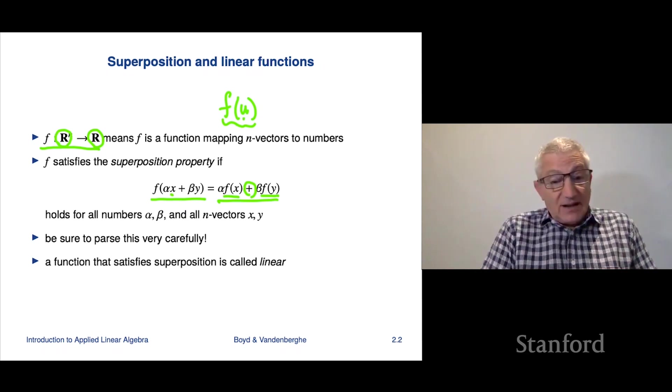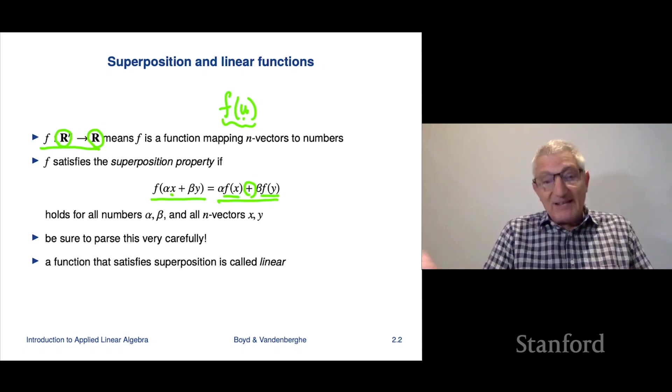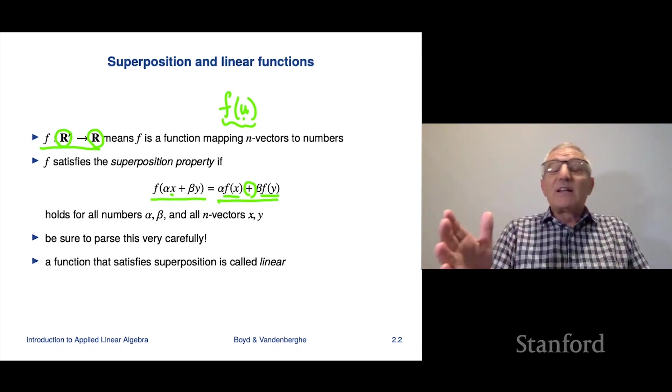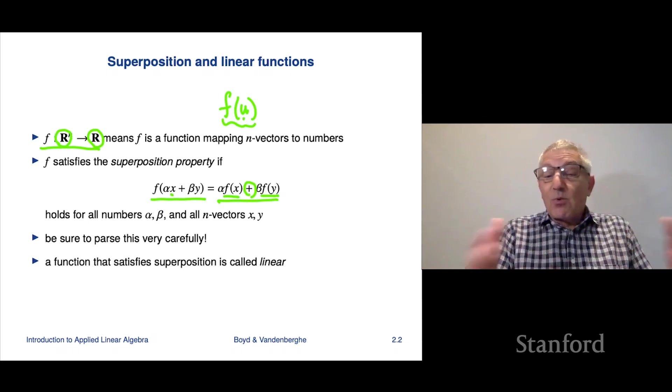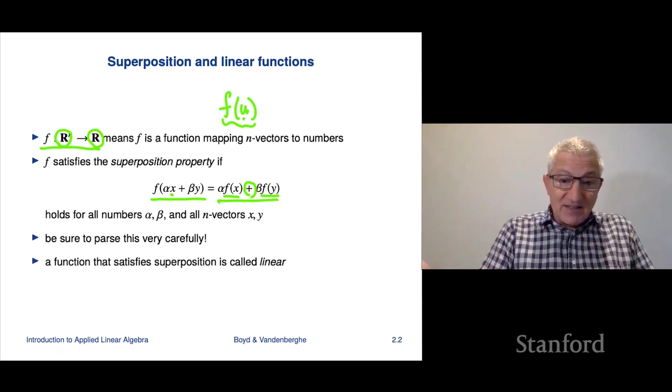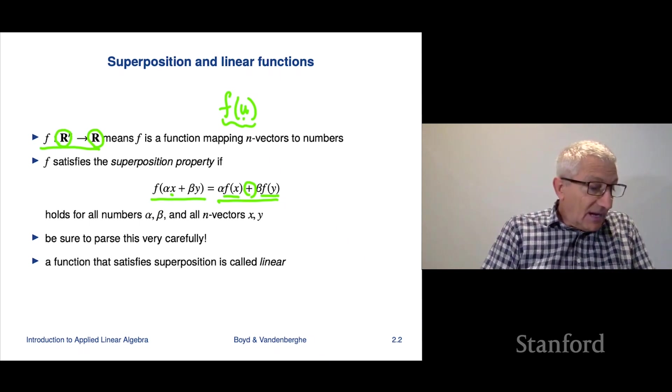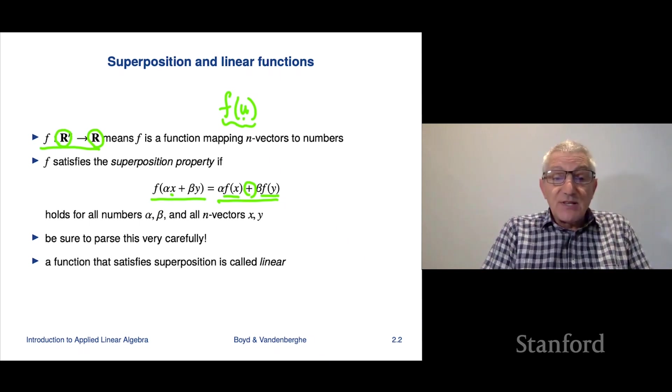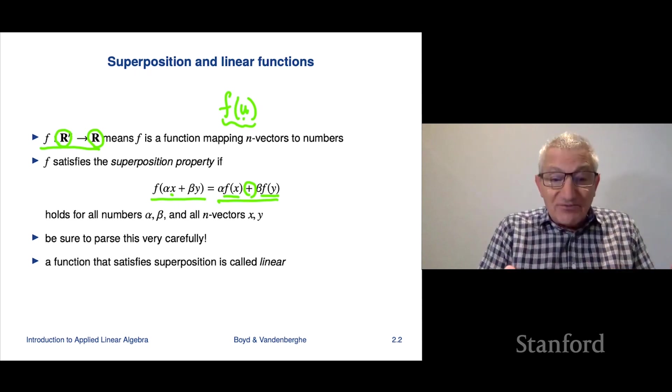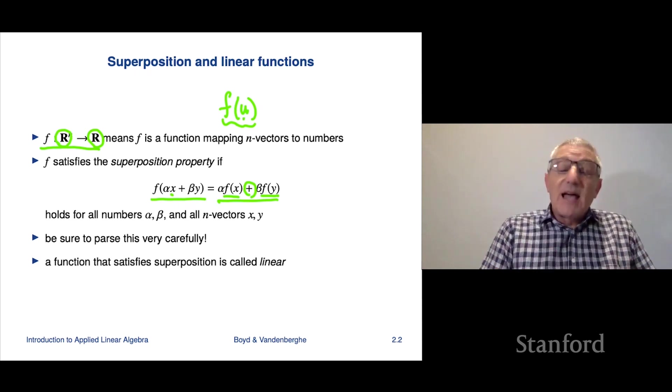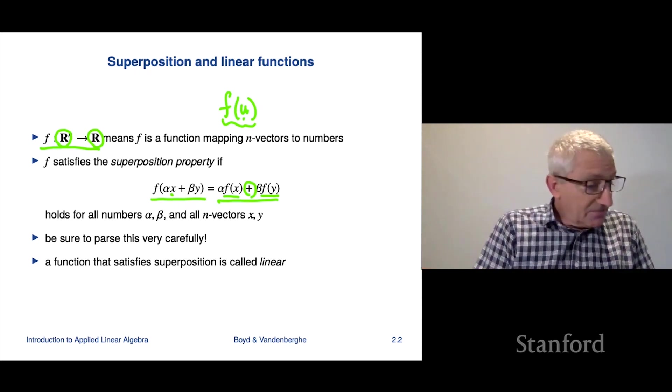What superposition says is that actually, you get the same thing if you form the linear combination, basically before applying the function or after. The way a mathematician would say it is they'd say that the function f commutes with linear combinations. In other words, you can either do it before or after, the order doesn't matter. So that's a very special function.